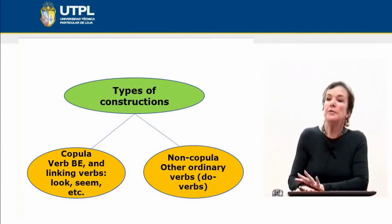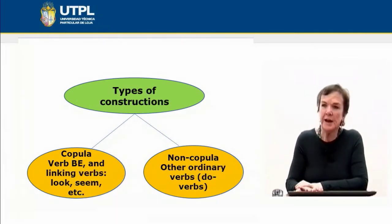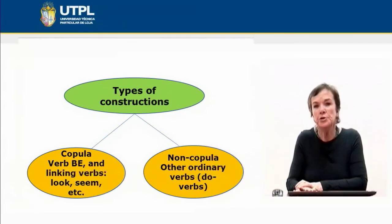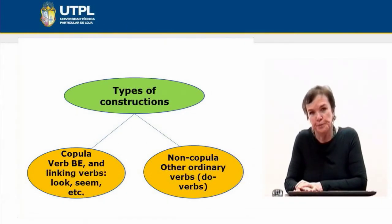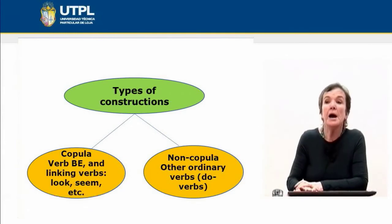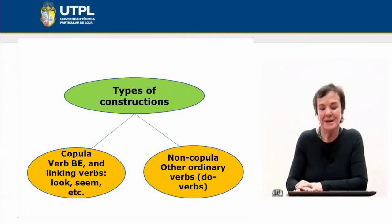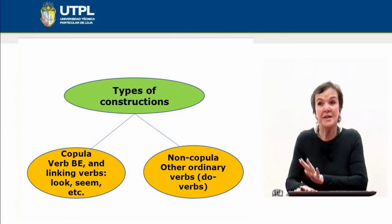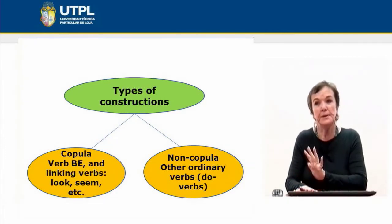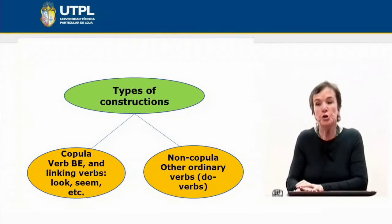A speech act can be formed by a single word, by a group of words, or a complete text. We have different types of constructions. We are going to begin with a basic division based on the structure of verbs. In the first group, we have copular verbs. The main representative of copular verbs is the verb 'be.'